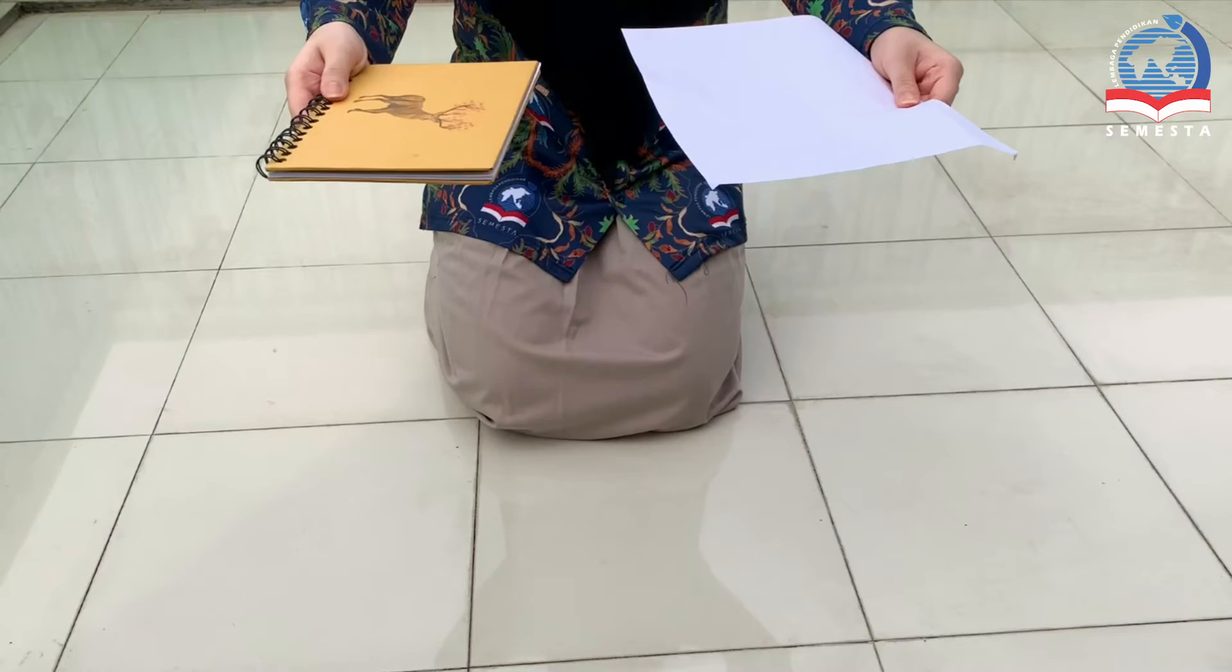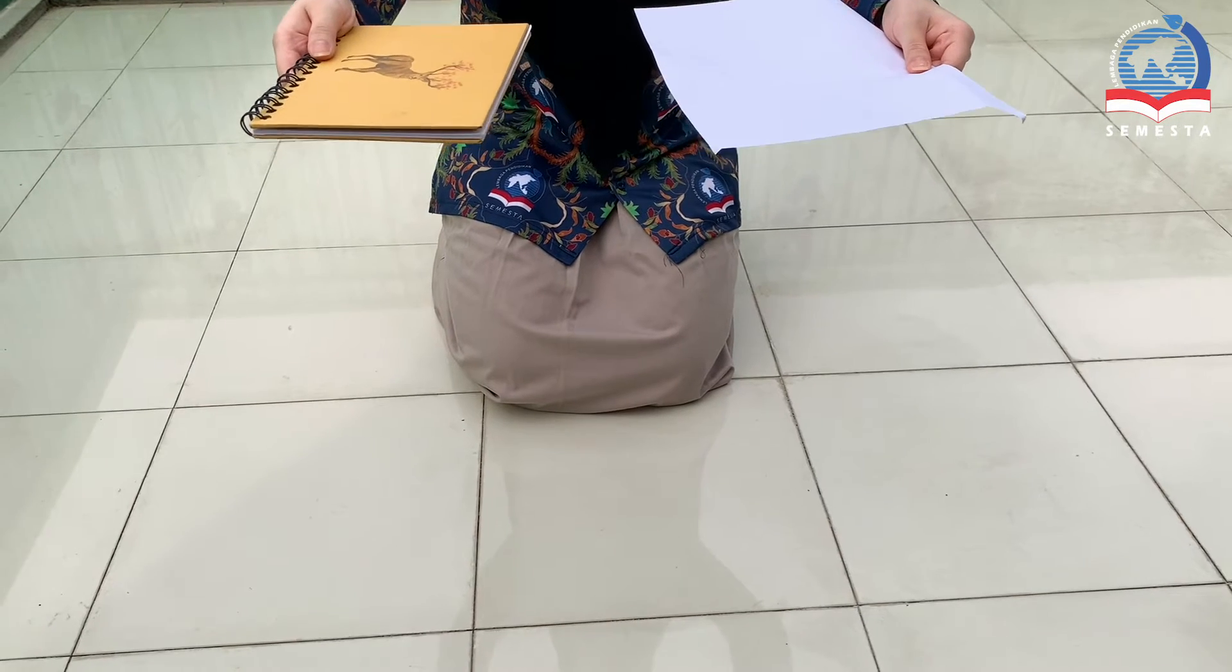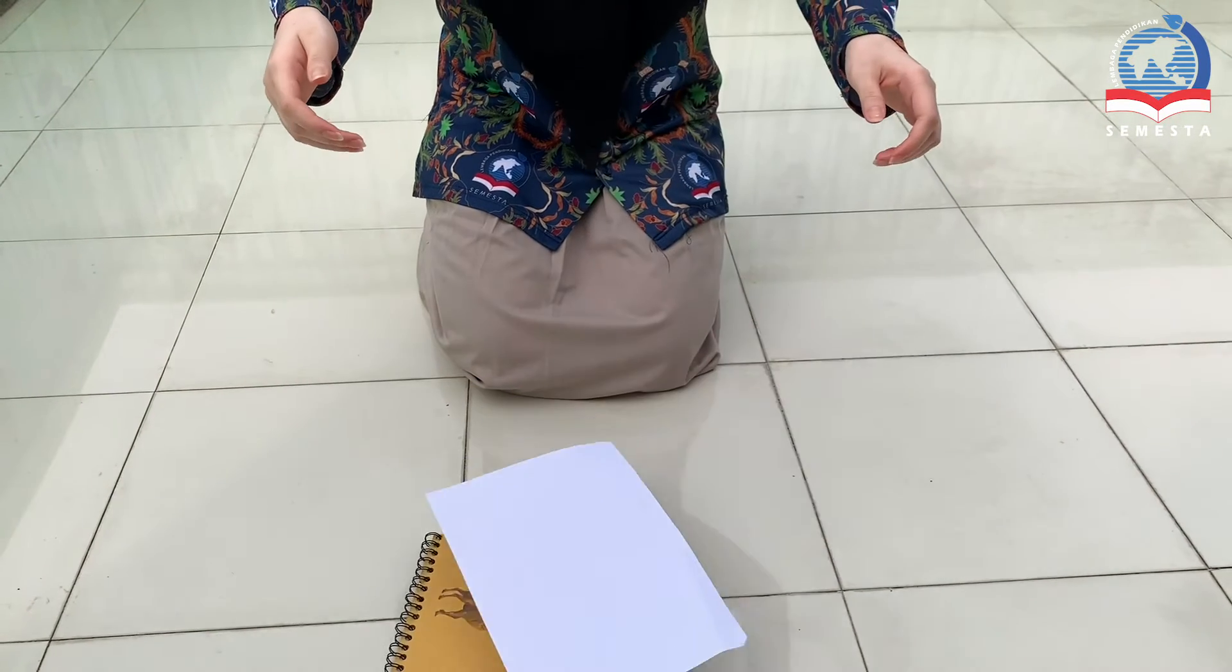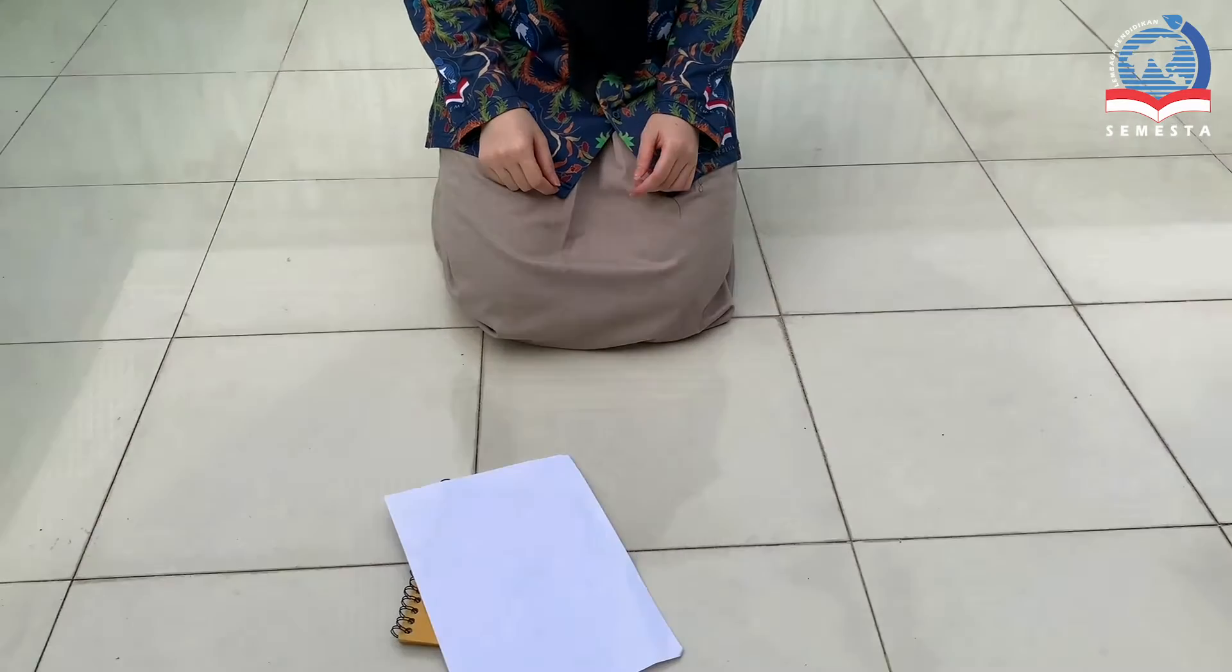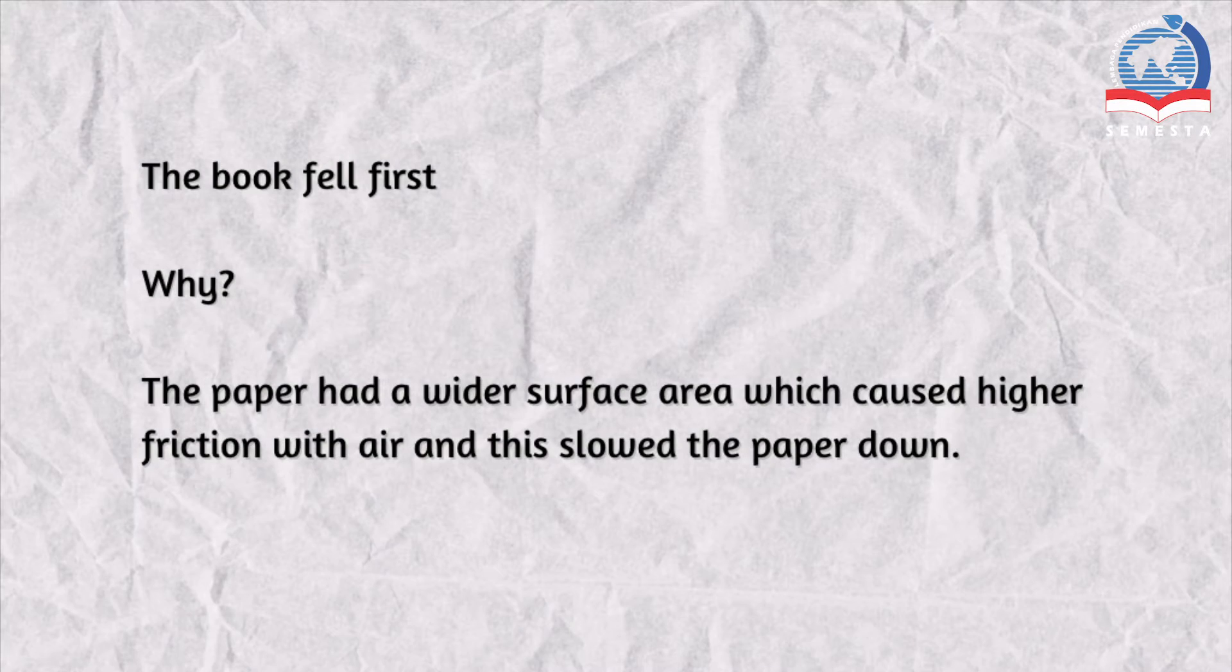First I will be dropping the book and the sheet of paper at the same time. As we can see in the video the book fell first and this is because the paper had a wider surface area which caused higher friction with air and this slowed the paper down.